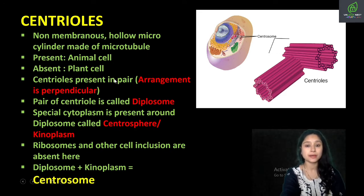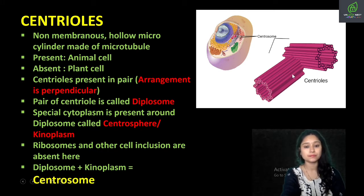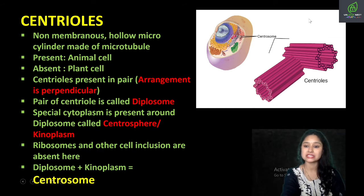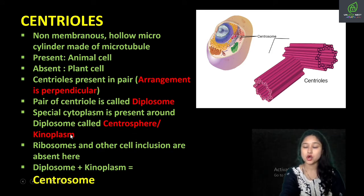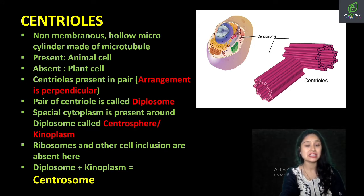Centrioles hamesha paired mein present rehenge — that means they are two in number, and the arrangement of these centrioles is perpendicular. The pair of centrioles is said to be diplosome. Aur is diplosome ke aas paas ek special cytoplasm present reheta hai, that is said to be centrosphere aur kinoplasm. Aur is cytoplasm ke aas paas aapko ribosome ya other cell inclusions tekne nahi milte hain — same as we discussed in the zone of exclusion associated with Golgi bodies.